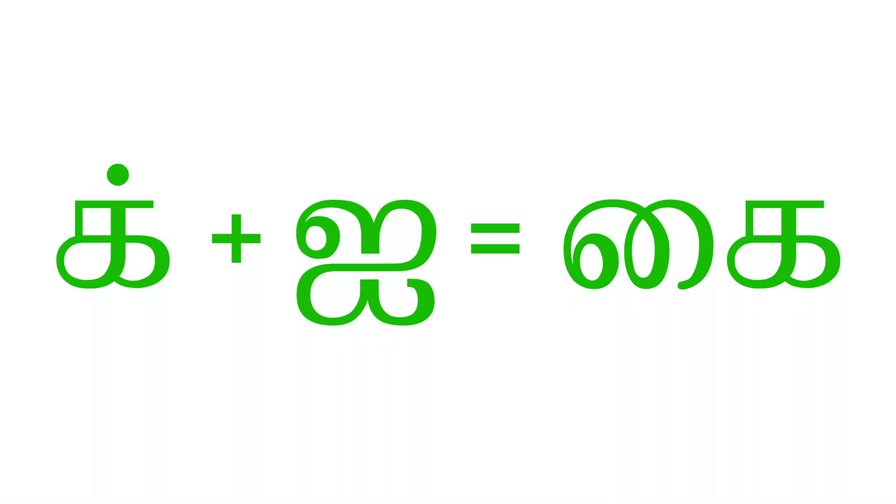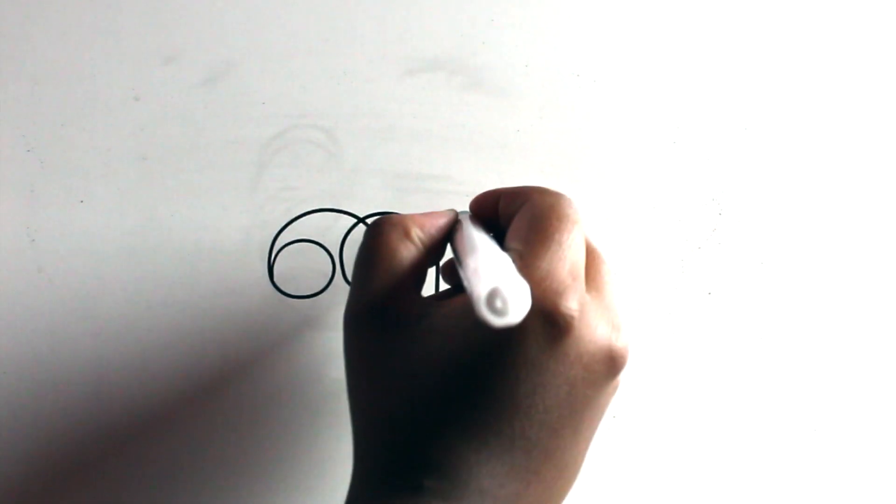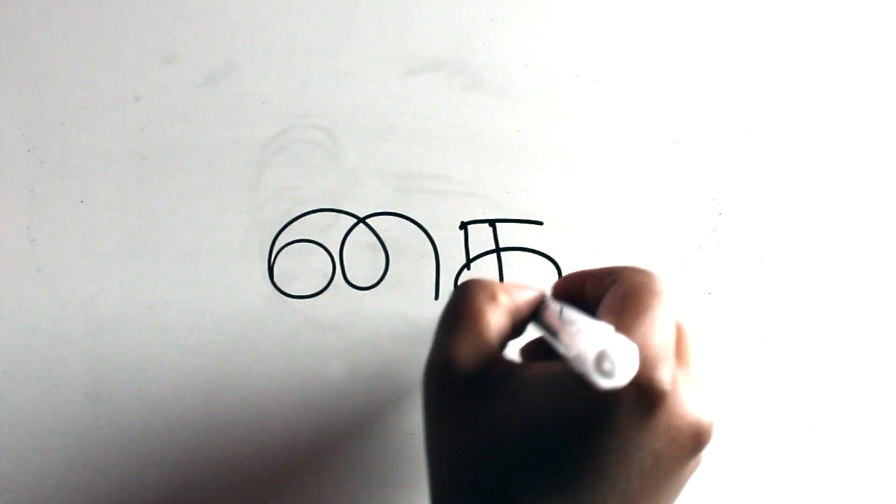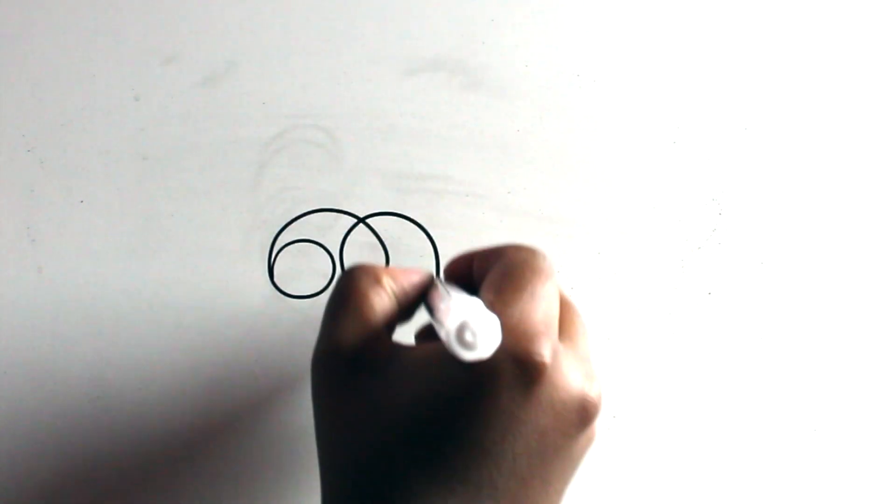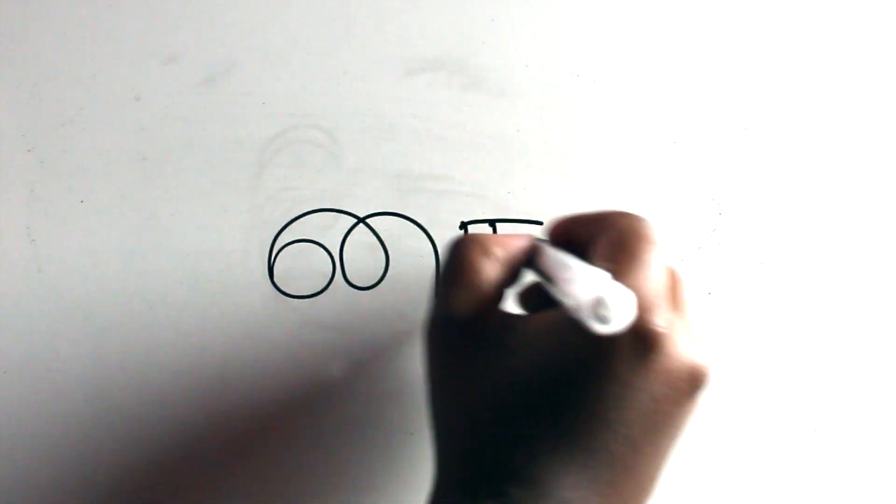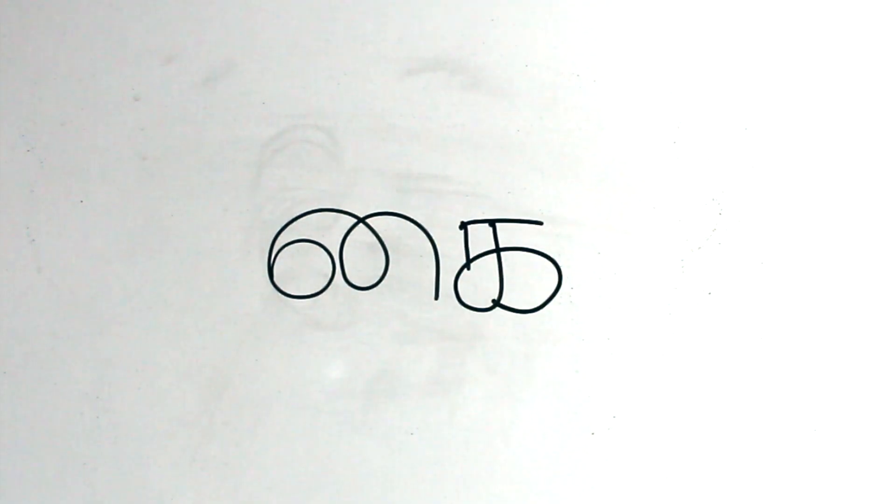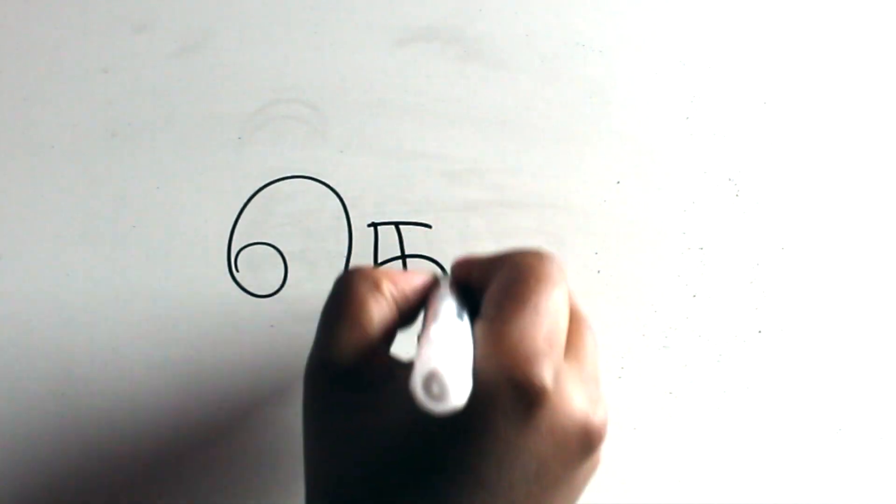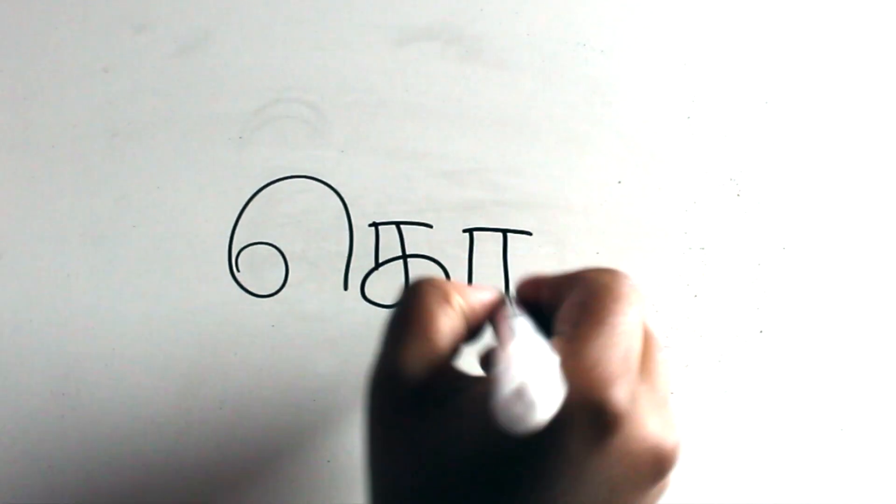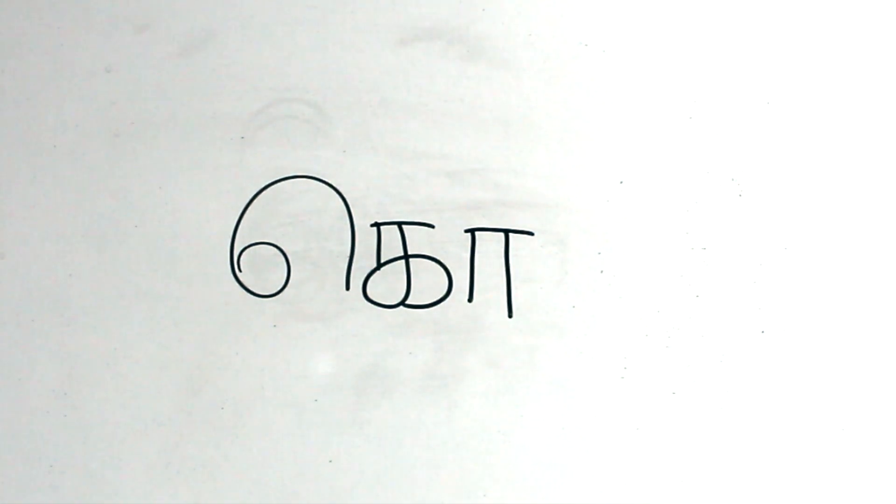Combining ik and ai gives you kai. To write the letter kai, first you write the sanmiri combo and then ka and add an arable. Let's write this one more time.